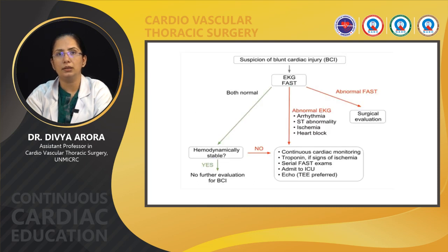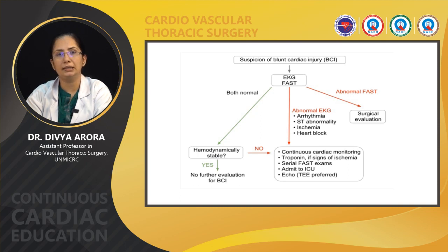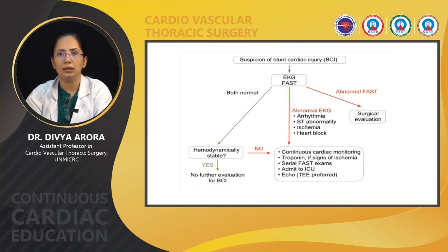Here is the algorithm for blunt cardiac injury. If there is suspicion of blunt cardiac injury, we focus on ECG and FAST. If both are normal and the patient is hemodynamically stable, no further evaluation is needed. If FAST is abnormal, surgical evaluation is needed. If ECG is abnormal with arrhythmias, ST abnormality, ischemia, or heart block, then continuous cardiac monitoring, troponin if signs of ischemia, serial FAST examinations, admission to ICU, and if further needed, echocardiography and TEE are preferred.